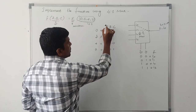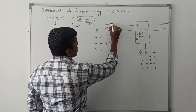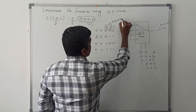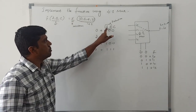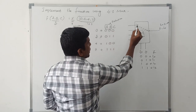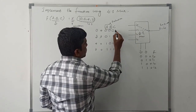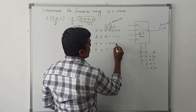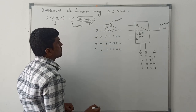Here, A and B are considered as the selection lines — replacing S0 and S1 with A and B. C is the input variable corresponding to I0, I1, I2, and I3.